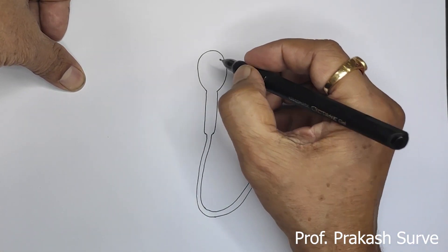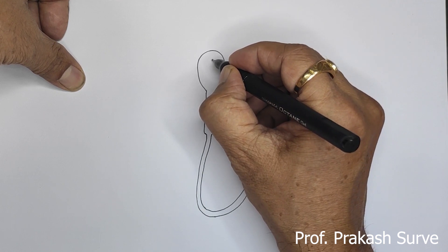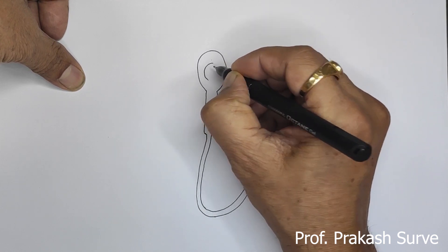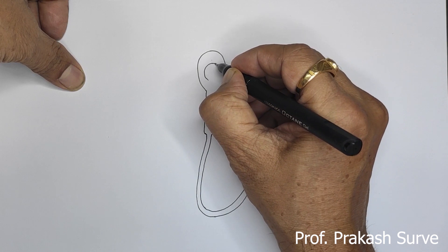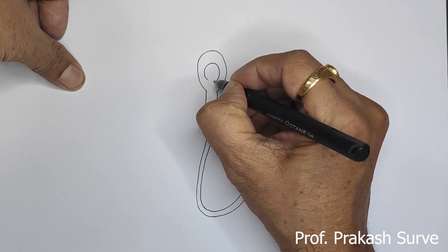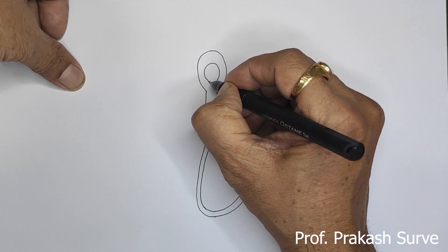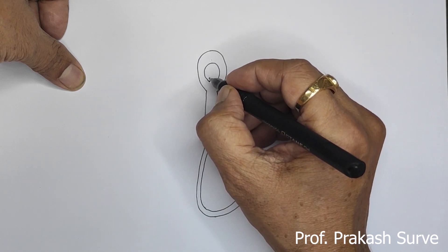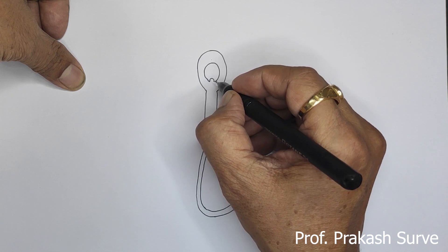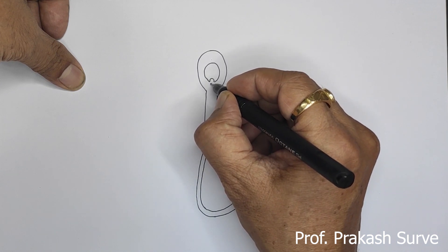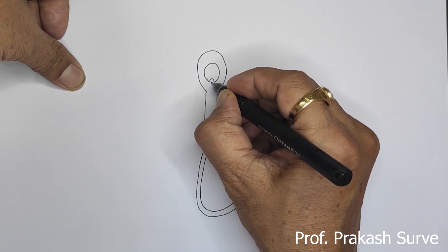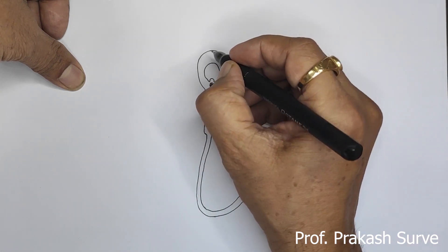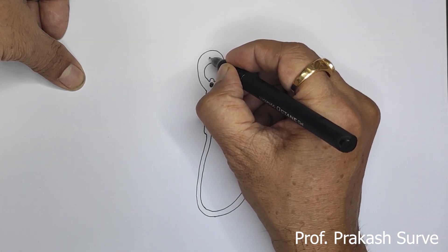First we will draw the nucleus. Here we will leave the place for the proximal centrosome, then we will draw the distal centrosome. Above this we will draw the acrosome.